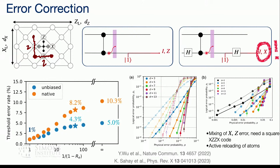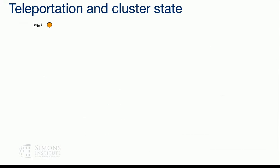Another annoyance is that you need active mid-circuit atom reloading: when you see an erasure, you must stop everything, reload the atom, then continue with the gates. Even though reloading is possible in principle, it's still slow. We want to avoid this and also use the rectangular XZX surface code for better overhead advantage. To achieve this, we move to a measurement-based or fusion-based approach — it's all the same thing, all teleportation-based error correction.